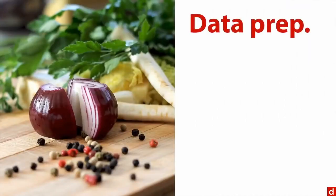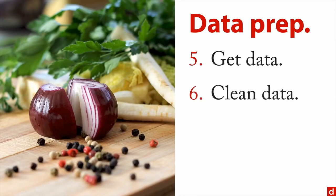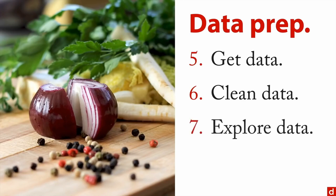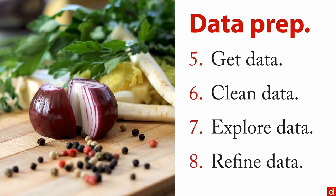Next is data prep — like food prep, getting the right ingredients ready. First, get the data, which can come from many different sources in many different formats. You need to clean the data — this tends to be a very large part of any data science project because you're bringing in unusual data from many places. You also want to explore the data: see what it looks like, the shape of distributions, what's associated with what. Then refine: choose variables to include, cases to include or exclude, and make any necessary transformations.